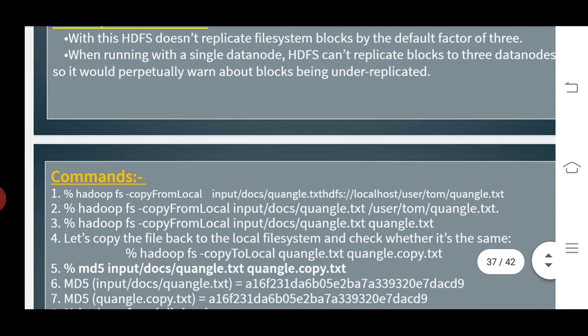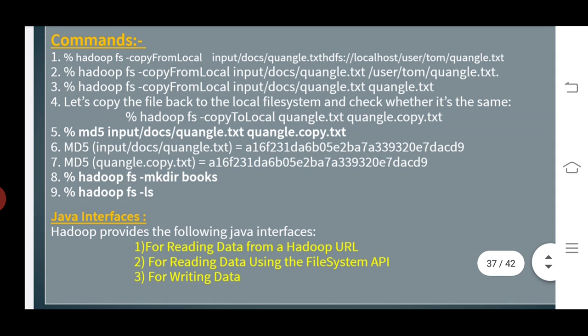Now we can see the commands we are using. There are nine commands. If you have to learn by practical, first you can give a command like: % hadoop fs -copyFromLocal input/docs/quangle.txt hdfs://localhost/user/tom/quangle.txt. These are the commands we are using. You can also give: % hadoop fs -mkdir books, to create a directory. You can also see a list of directories.